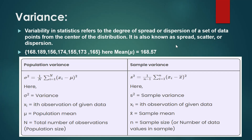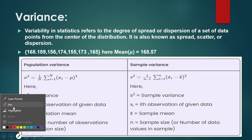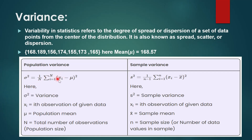If you look at the formula, sigma squared is equal to 1 by n, summation of i equal to 1 to n, of (x_i minus mu) whole square. Here x_i is the data point. For example, x_i of the first point is 168 minus 168.57, whole square.